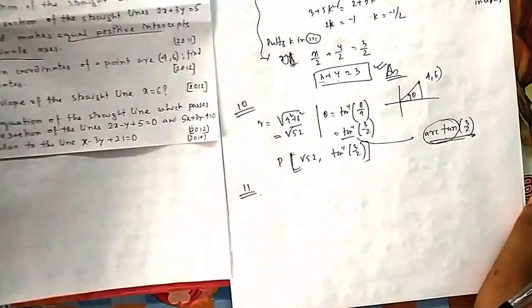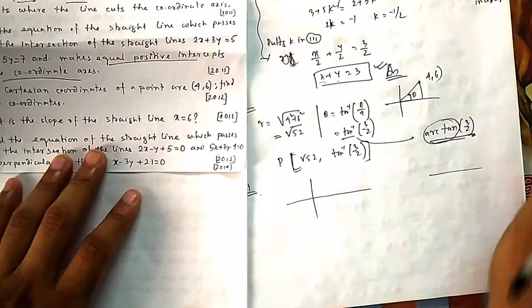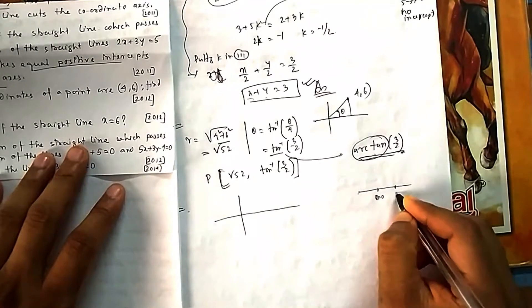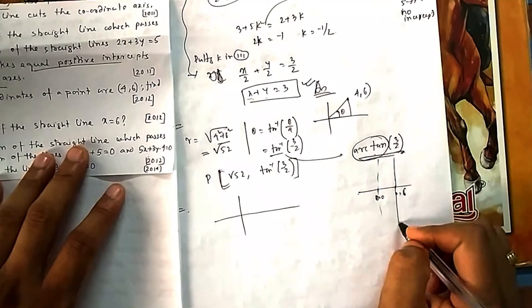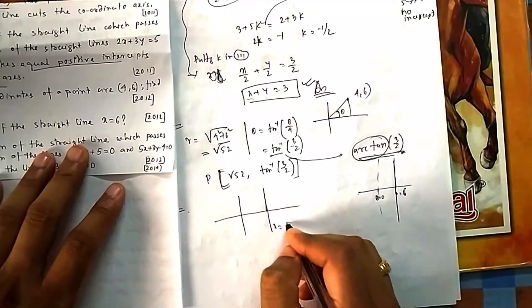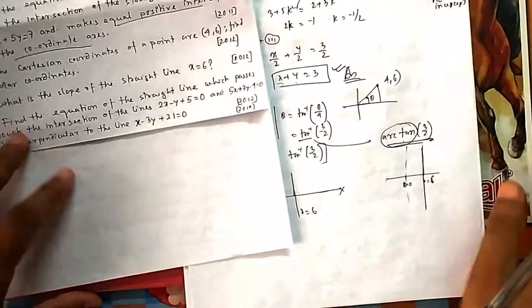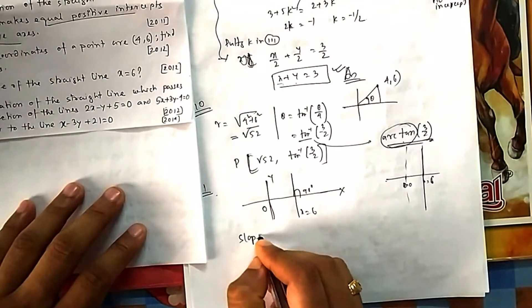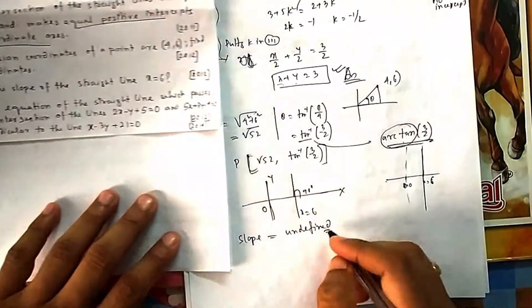Question 11: Find the slope of the line x equals 6. On a number line, x equals 6 is just a point, but with two axes you can move along the vertical direction while keeping x fixed at 6. So x equals 6 represents a vertical line perpendicular to the x-axis. The angle it makes is 90 degrees, and tan(90) is undefined. Therefore the slope of the line x equals 6 is undefined.